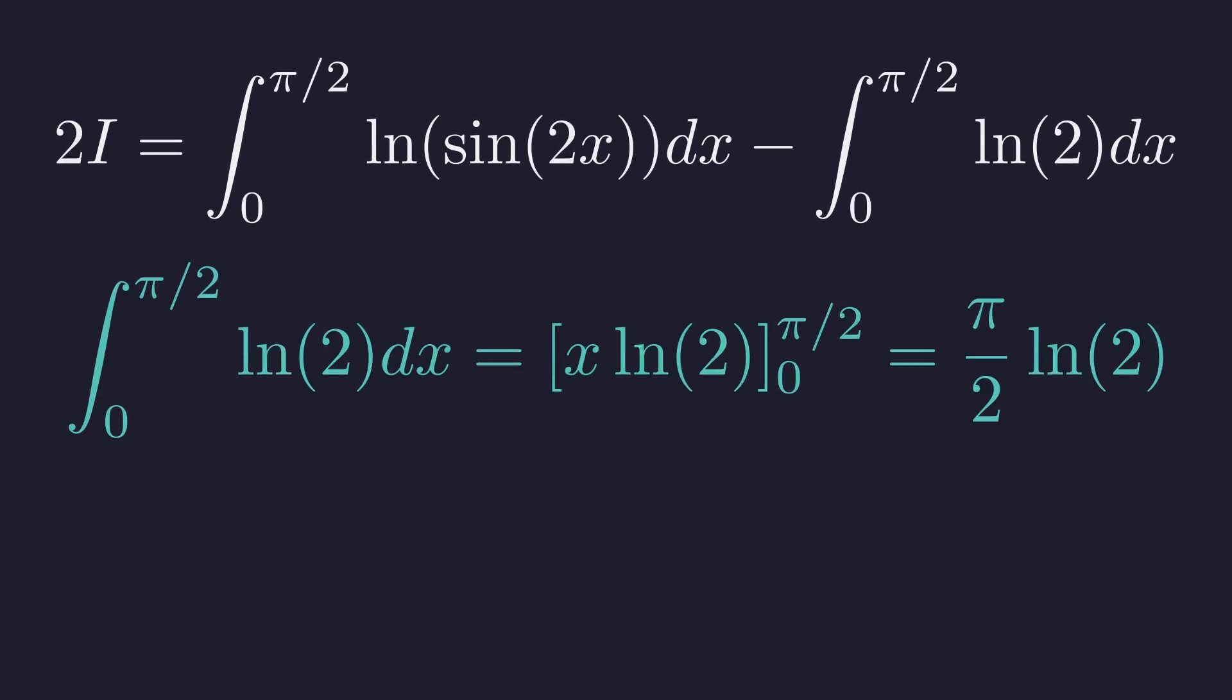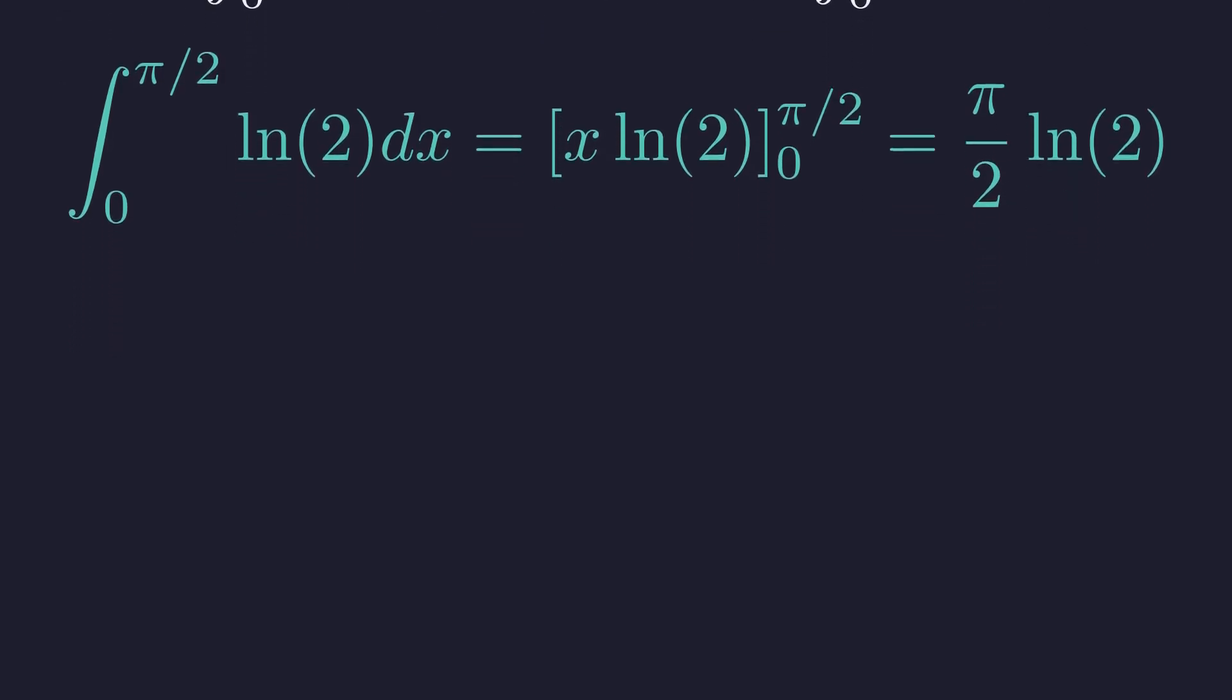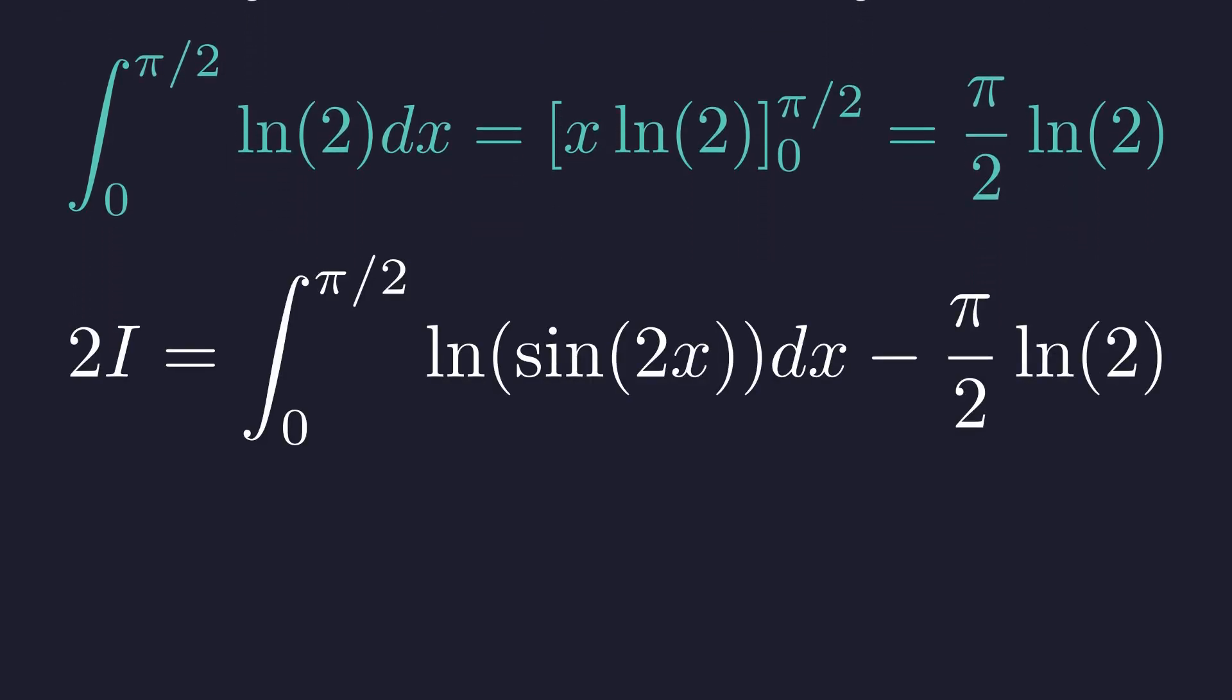The second integral is straightforward. Since natural log of 2 is a constant, the integral evaluates to pi over 2 times the natural log of 2. Substituting this result back, our equation now looks like this.